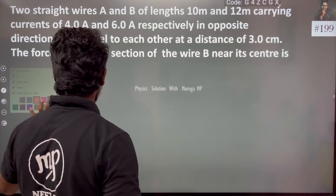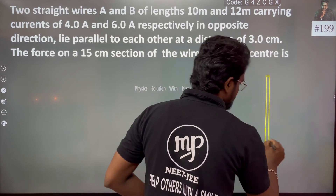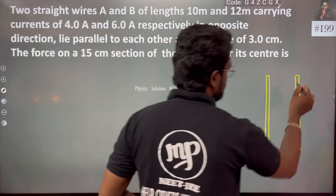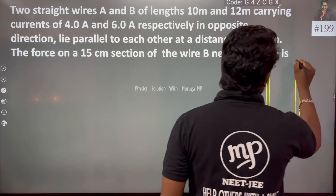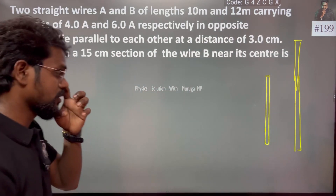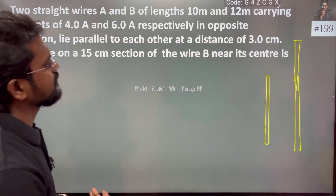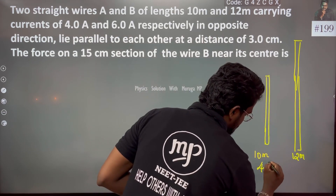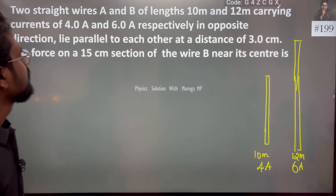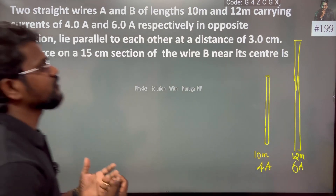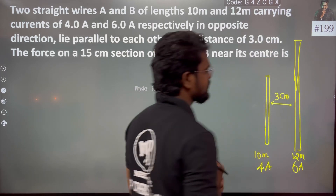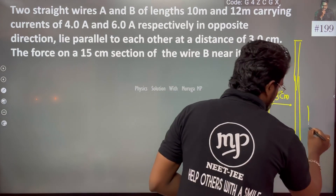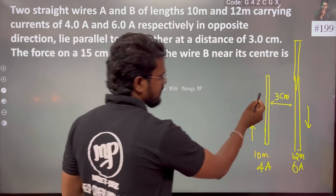So we have two parallel wires — one is 10m and the other is 12m. The current in the first wire is 4A and in the second wire is 6A. They are parallel to each other at a distance of 3cm. Since the currents are in opposite directions, the two conductors will repel.